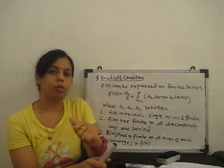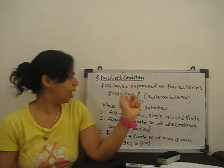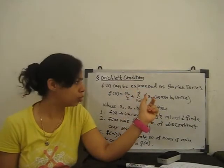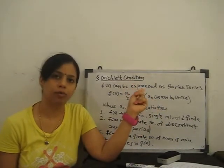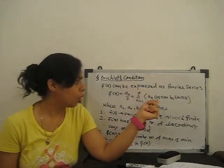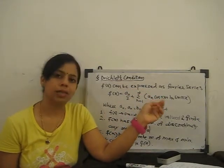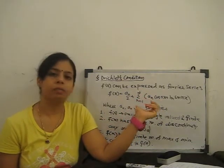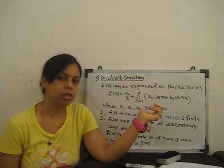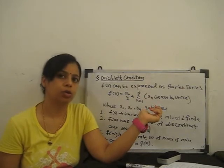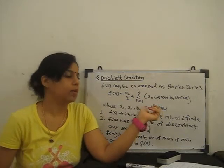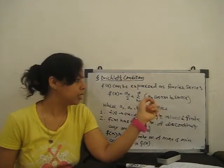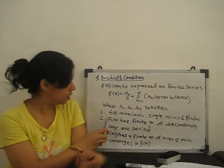If we want to expand any function as a Fourier series, f(x) equals a0/2 plus summation n going from 1 to infinity of an·cos(nx) + bn·sin(nx), where a0, an, and bn are the constants of the Fourier series, which we find using Euler's theorem. We must satisfy all these conditions.